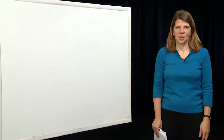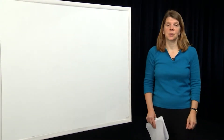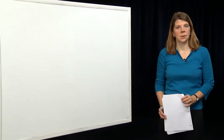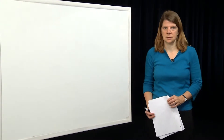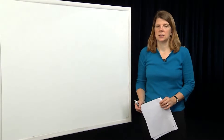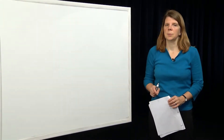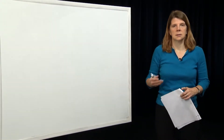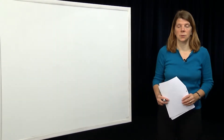Hi, everyone. My name is Claire Tomlin. I'm a professor in electrical engineering and computer sciences at Berkeley, and this is the 16th module in a series that we're recording to support the course EECS 221A, Linear System Theory at Berkeley. The topic of this module is on linearity and time invariance, two properties that apply to dynamical systems of the kind we introduced in the last module.